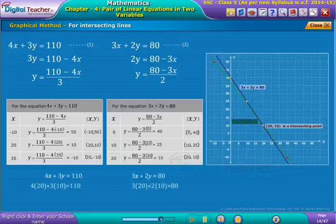Now, substituting the values of X and Y in equations 1 and 2, we find that both the equations are satisfied as shown on the screen. Thus, by graphical method, the cost of each notebook is 20 rupees and each pen is 10 rupees. Recall that we got the same solution using the model method as well.